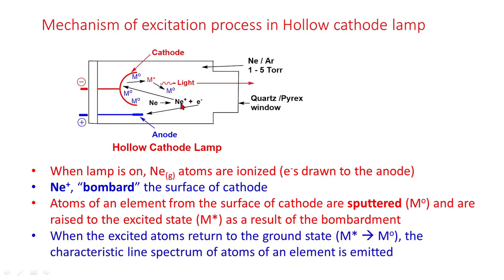Then further, neon cations strike the ground state gaseous atoms, raising them to the excited state. When these excited state atoms come back to the ground state, they emit characteristic radiation.